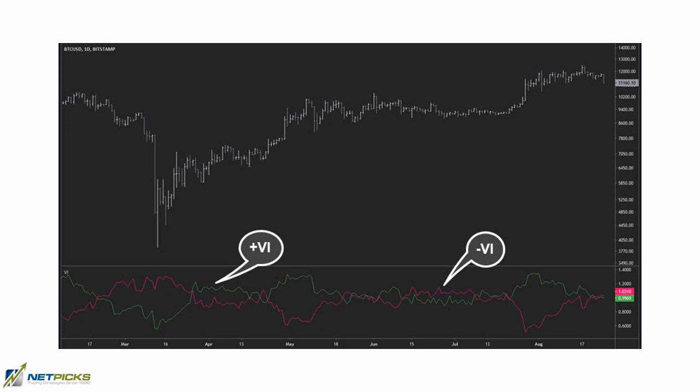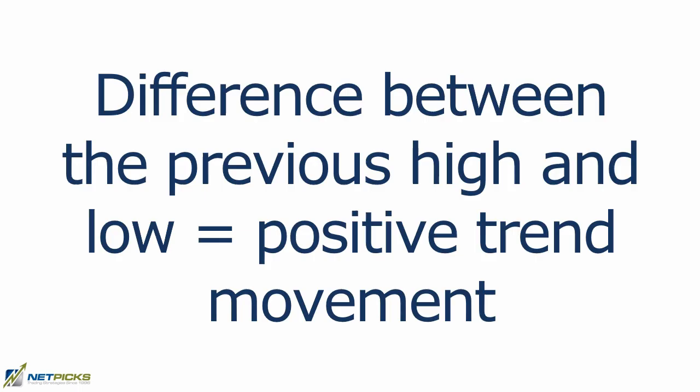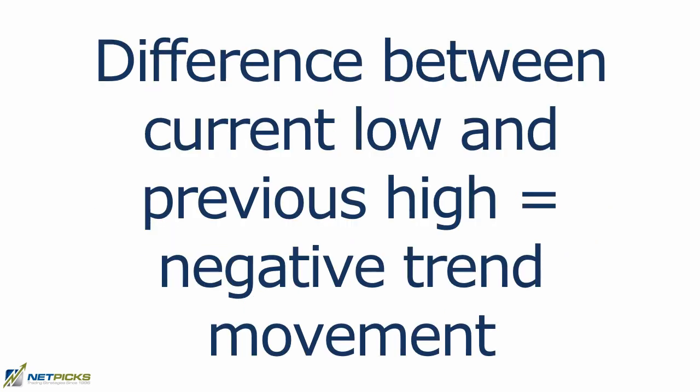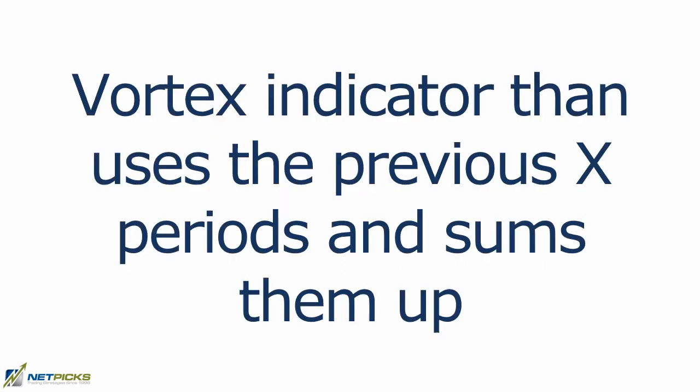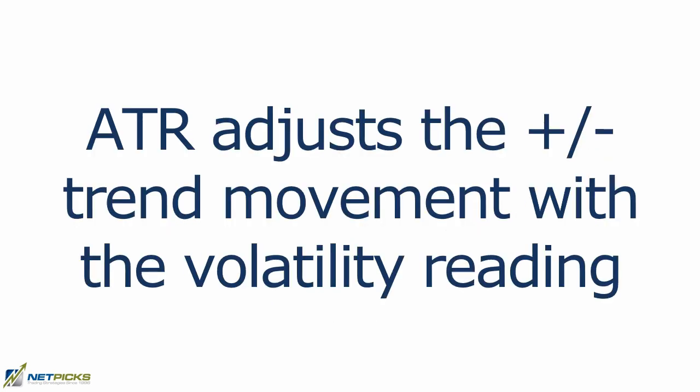The indicator measures trend strength using the Average True Range (ATR). Even though the calculation is done for you, you should know it: it calculates the difference between the previous high and the current low for positive trend movement, and the difference between the current low and previous high for negative trend movement. The indicator uses the previous X number of periods — the default is 14 — sums them up, and then uses the ATR over those periods to adjust the trend movement with a volatility reading.